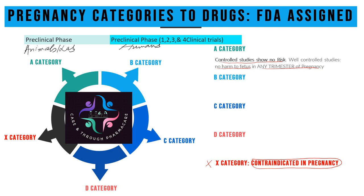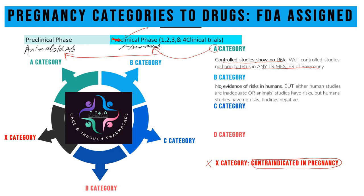Category A drugs are safe in humans, and safety is established in the clinical phase as well as in the laboratory or experimental animals. As far as Category B is concerned, the best narrative is: there is no evidence of risk in humans in clinical trials, yet there have been reports in animal studies, or human studies are still lacking.